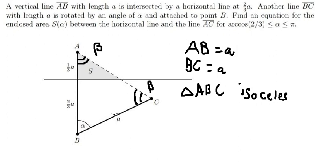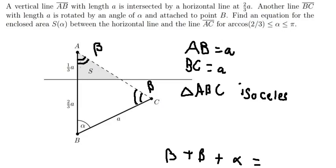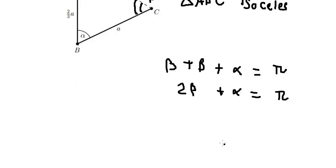Now we want to find angle beta. We know that the sum of three angles in one triangle is π. So we have 2β plus α equals π. We divide both sides by 2.